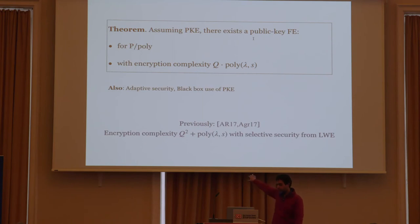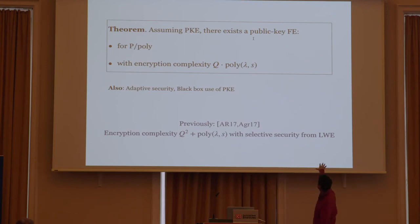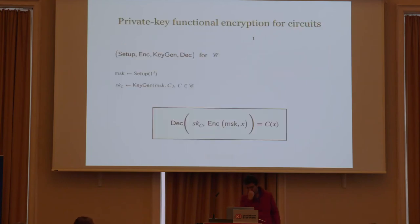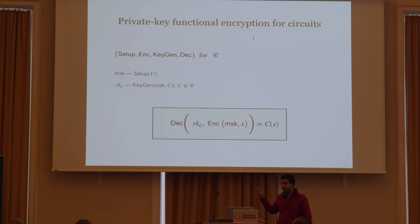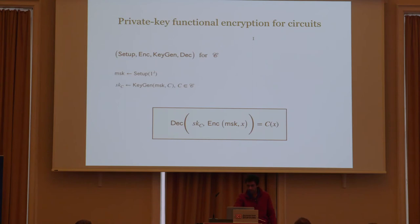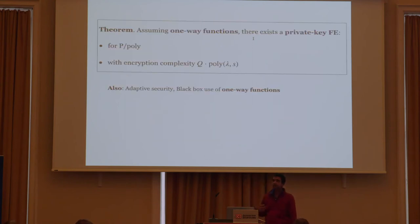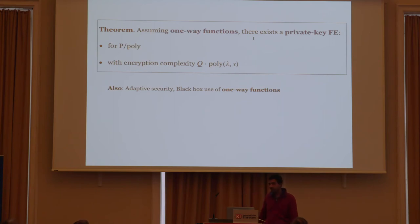We improve the state-of-the-art in three ways: first, we improve the encryption complexity; second, we get adaptive security as opposed to selective; and third, we get it from the minimal assumption of public key encryption. We also give a construction of private key FE — where the setup algorithm outputs only the master secret key, and encryption requires the master secret key. Assuming one-way functions (the minimal assumption), we get a private key FE scheme for polynomial-sized circuits with encryption complexity linear in Q, with adaptive security and black-box use of one-way functions.